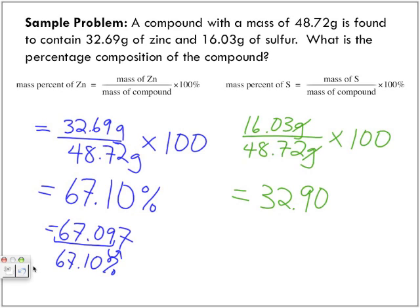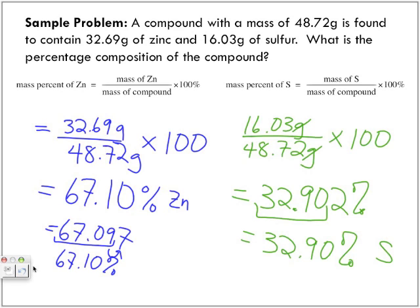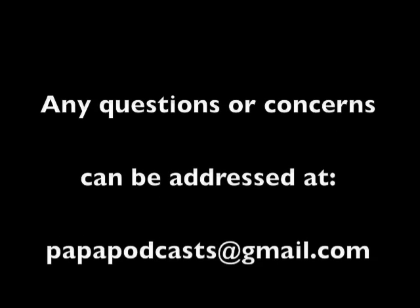We need four significant digits, so we take those and get 32.90. In the end, we have 67.10 percent zinc and 32.90 percent sulfur.